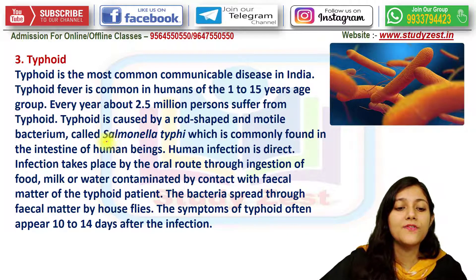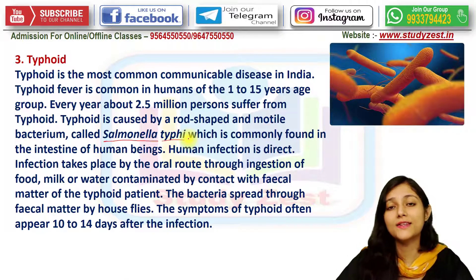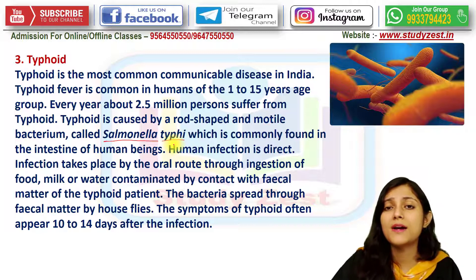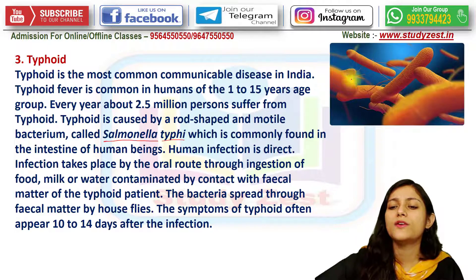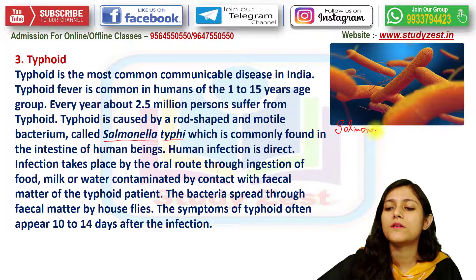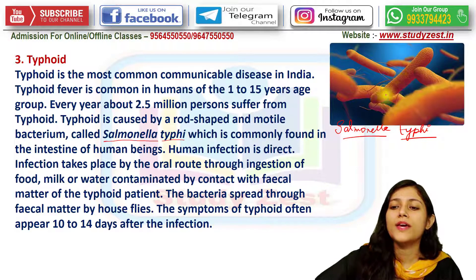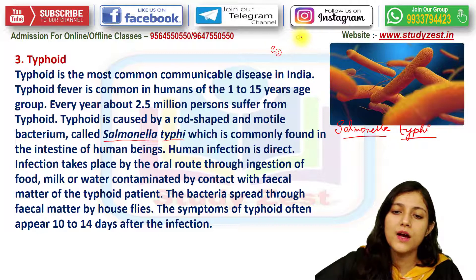Typhoid is caused by a rod-shaped, motile bacterium named Salmonella typhi — this is its scientific name, so you must underline it in exams. This is a rod-shaped bacterium. Bacteria can have many shapes; for instance, coccus is a round type of bacteria. Salmonella typhi is rod-shaped and motile, meaning movable.